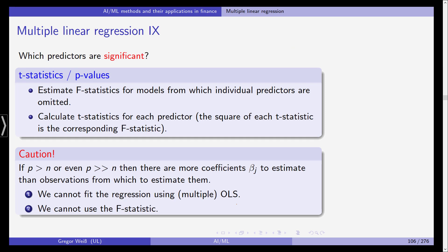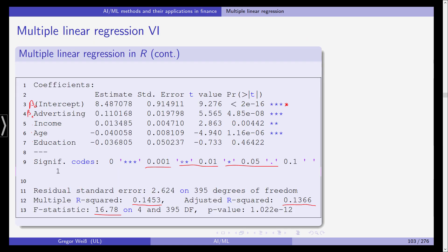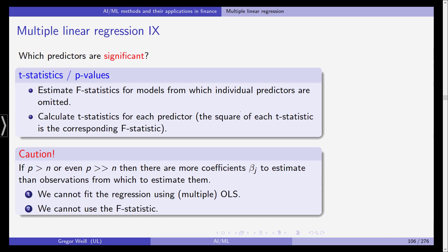Now, which predictors are significant? We've already seen in the R output that not all predictors have an insignificant coefficient. But which predictors are significant? Again, as in the simple linear regression case, we estimate T statistics and p-values. So we calculate T statistics for each predictor, and the square of each T statistic is also the corresponding F statistic. And based on those T statistics that are also given here in this column, we can then also convert those T values into T statistics and p-values. And you can see that three out of the four predictors are significant in our regression.